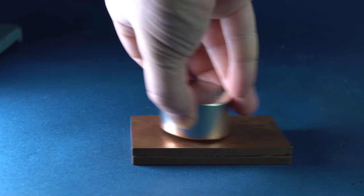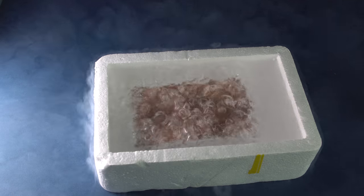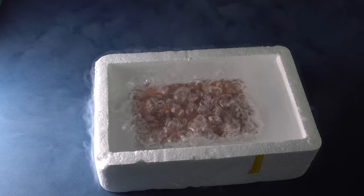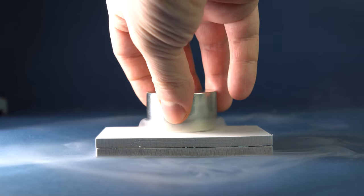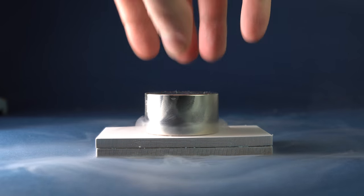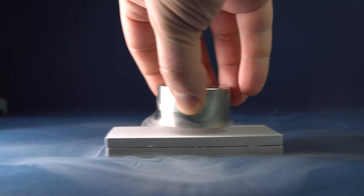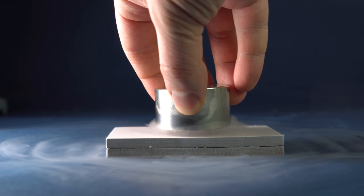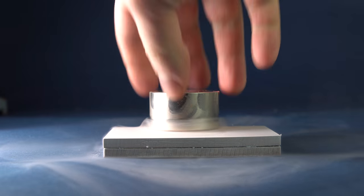The so-called induction effect can be stretched if we cool down the copper plate with liquid nitrogen. The magnet hangs over the plate much longer now. As by cooling, the internal resistance of copper has dropped, and the resulting current can exist longer.